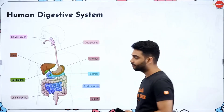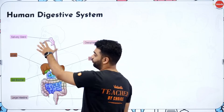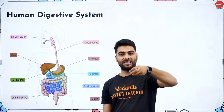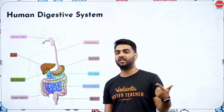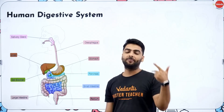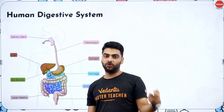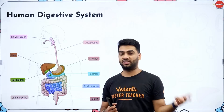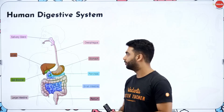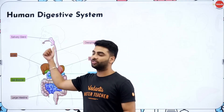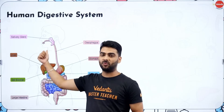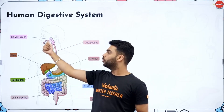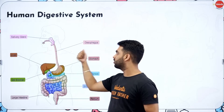For nutrition in human beings, the processes involved are: ingestion — taking in food; digestion — breaking down complex food into simple forms; absorption of nutrients; assimilation — using nutrients to make complex proteins; and egestion — excretion of waste food. We have three pairs of salivary glands: sublingual, submandibular, and parotid.